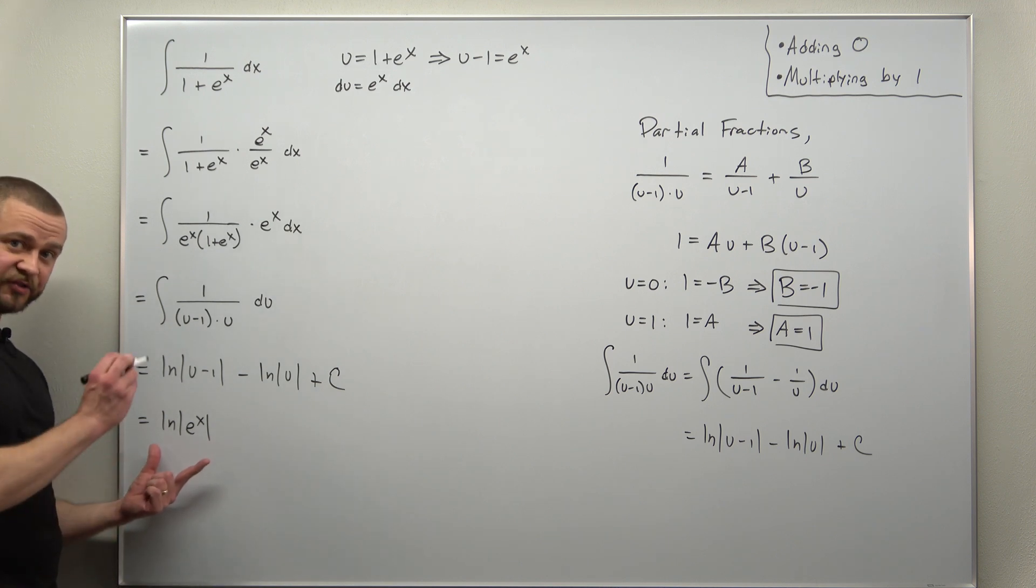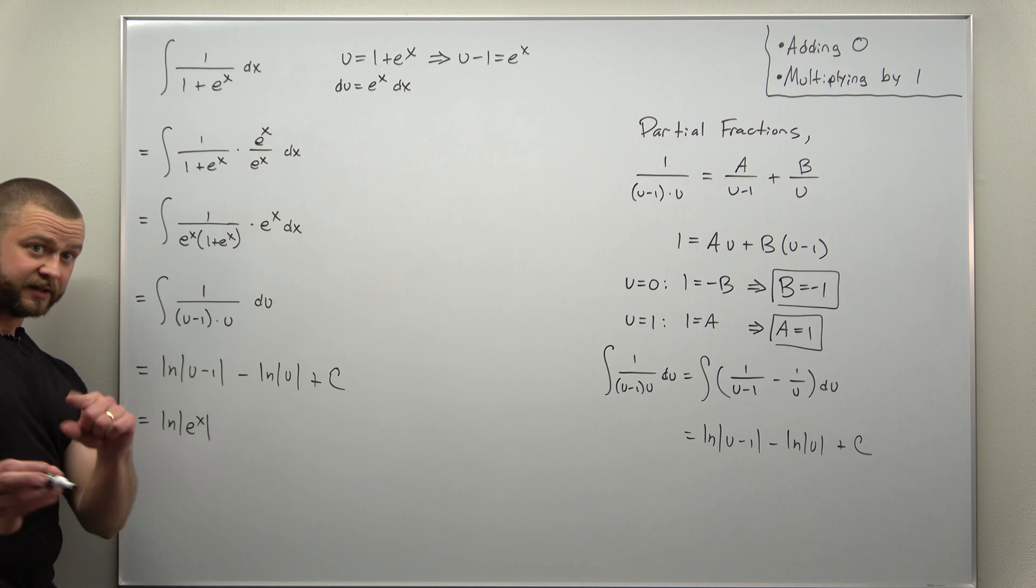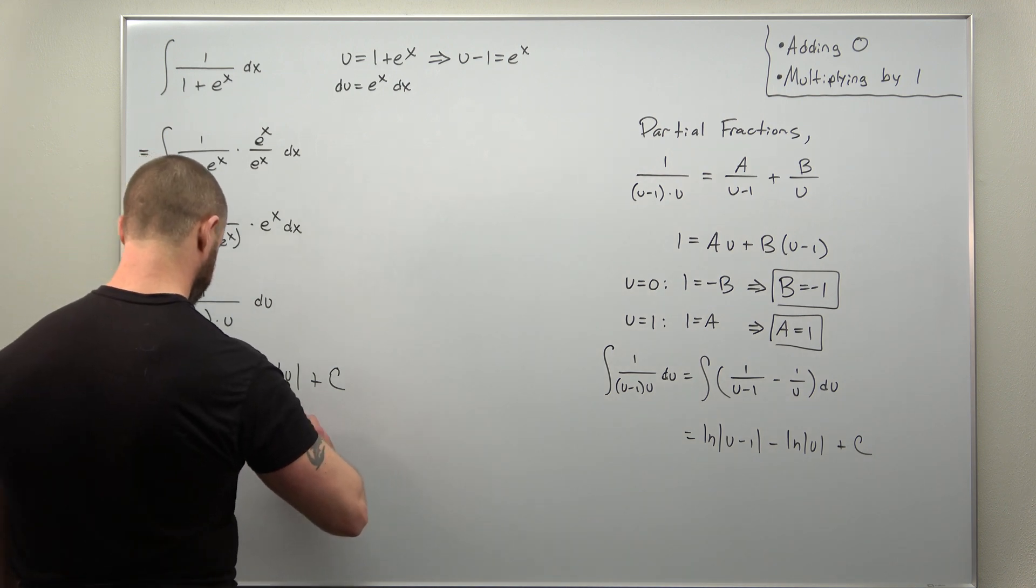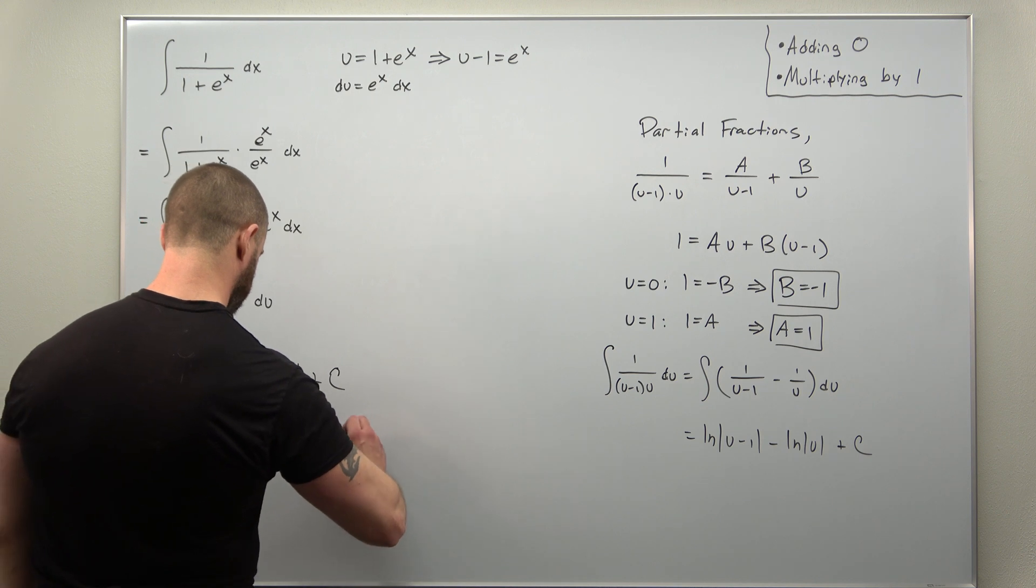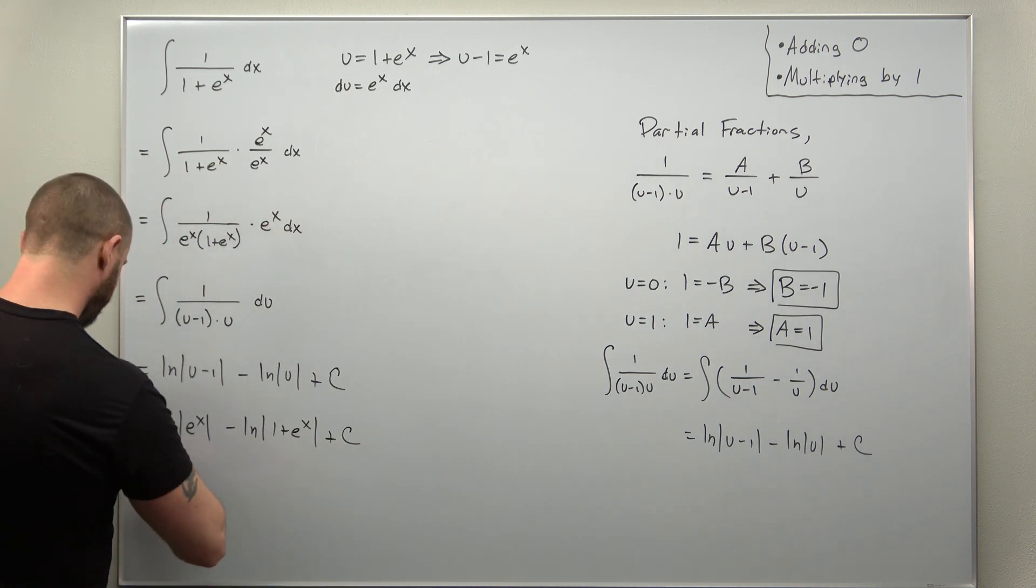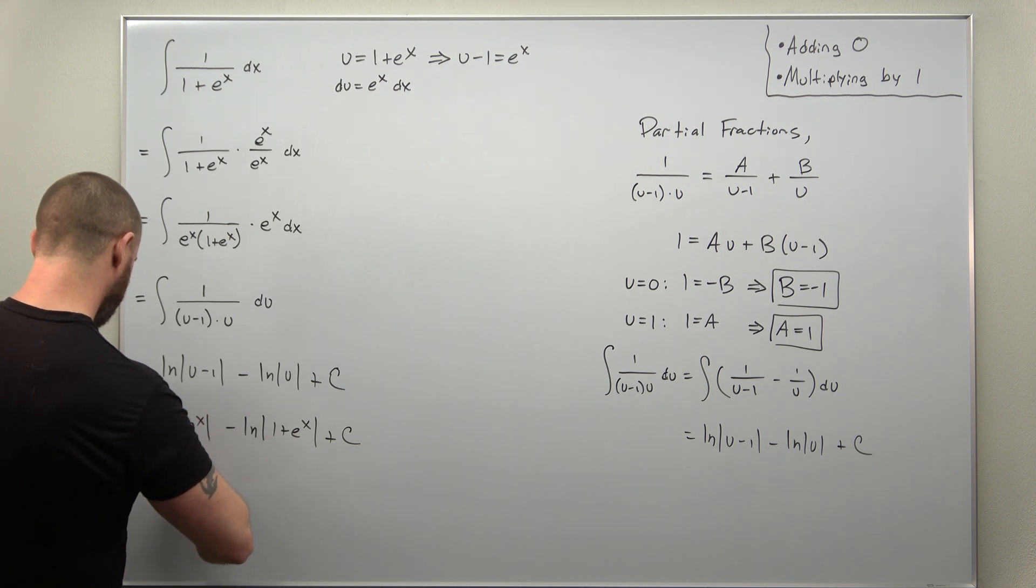You can probably recognize natural log with e to the x inside, that's going to cancel out to x. So if we just go ahead and complete that, recognizing that natural log of e to the x cancels to x...